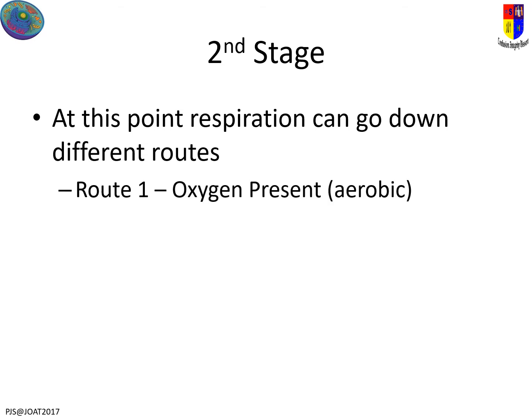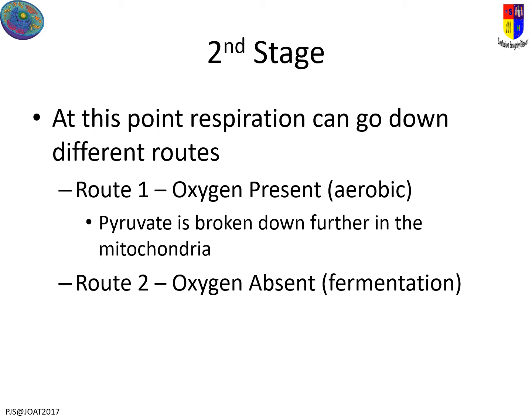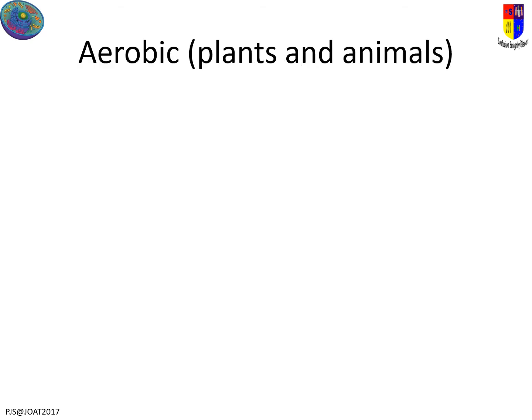Moving on, there is now an option because it can go down two different possible routes. It can either go down route one with oxygen present — that's aerobic respiration, heading to the mitochondria to break pyruvate all the way down. If you don't have any oxygen, you go down a series of pathways called fermentation. Fermentation is different for plants and animals: plants break pyruvate down into carbon dioxide and ethanol, while animals convert it into lactate.